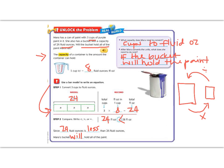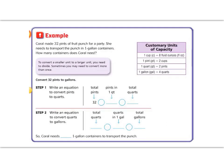Great job so far, 5th graders. Let's continue on to the example. In the example, Coral made 32 pints of fruit punch for a party. She needs to transport the punch in 1-gallon containers. How many containers does Coral need?